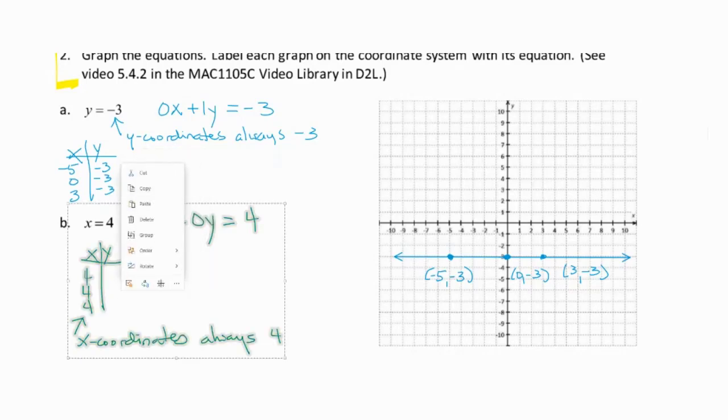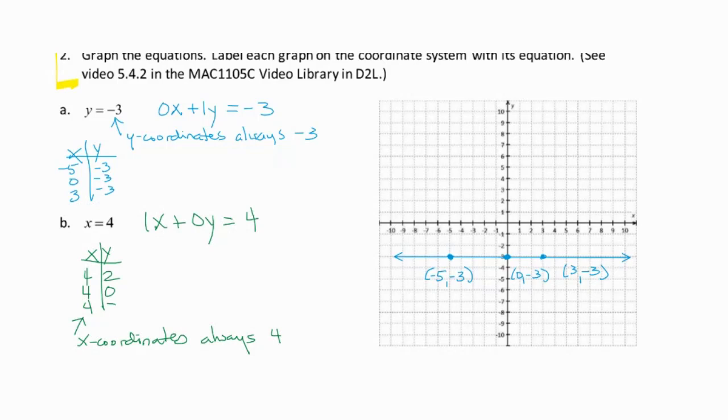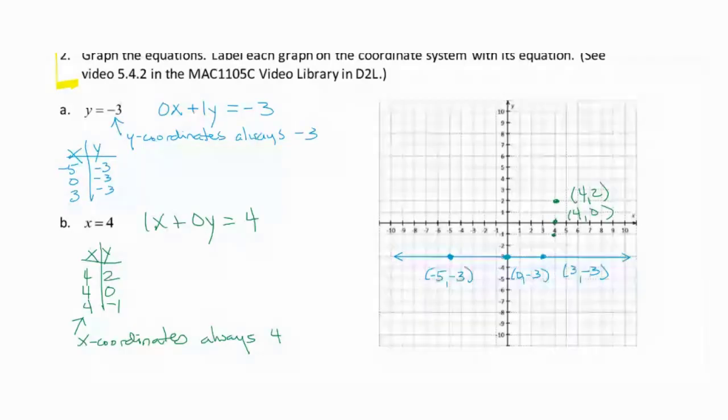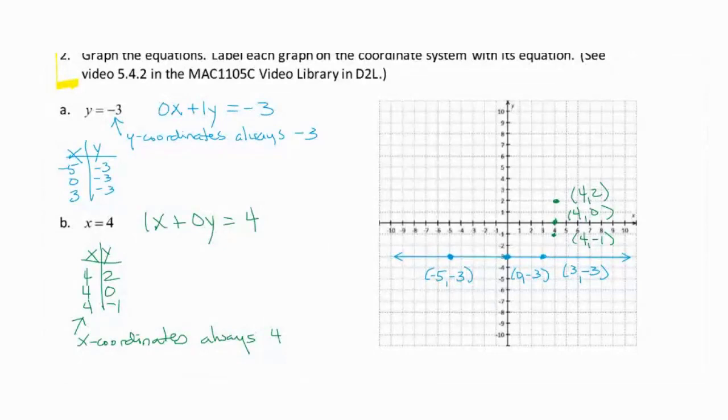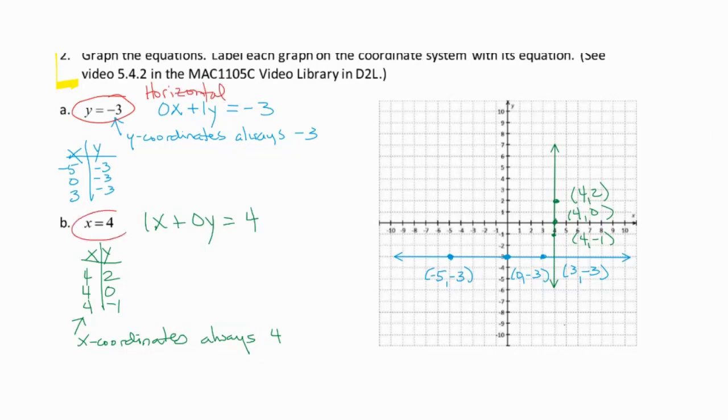Okay. So maybe y is equal to 2 or 0 or negative 1. Okay. So I've got 4, 2, 4, 0 and 4, negative 1. Then you can see that we're going to get a vertical line there. Anytime you have an equation of the form y equals a number, you get a horizontal line. And anytime you have an equation of the form x equals a number, it's going to be a vertical line. I hope you found this video helpful. If you did, please remember to give it a thumbs up. That helps other students to find the video.